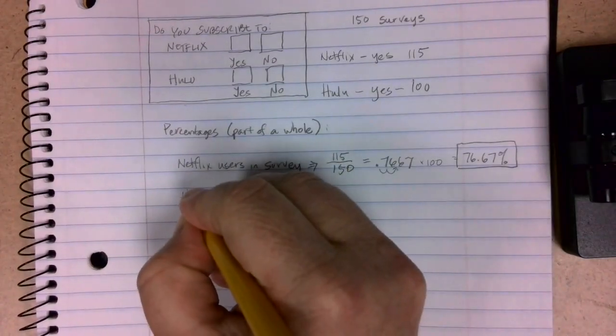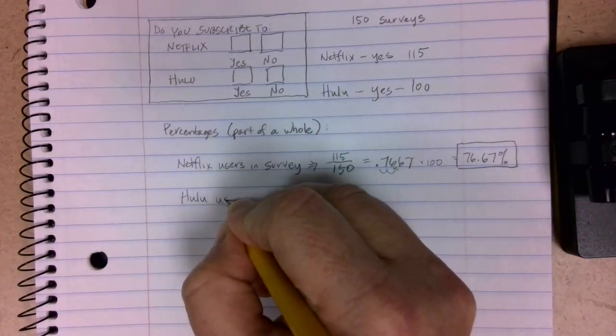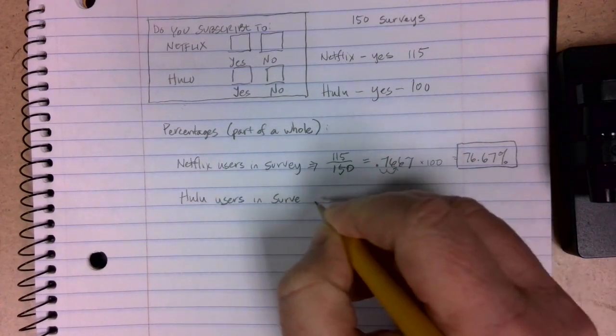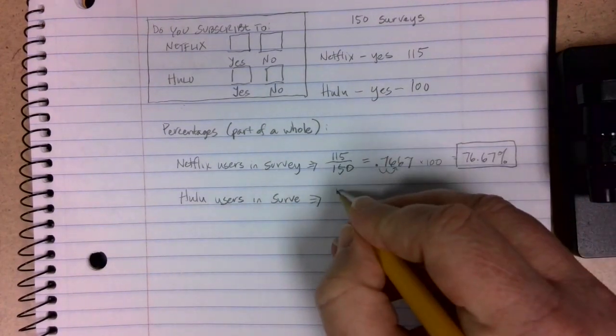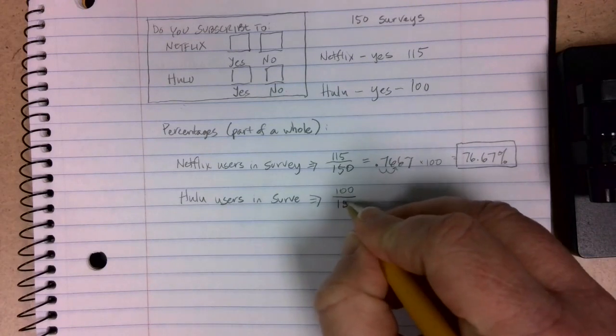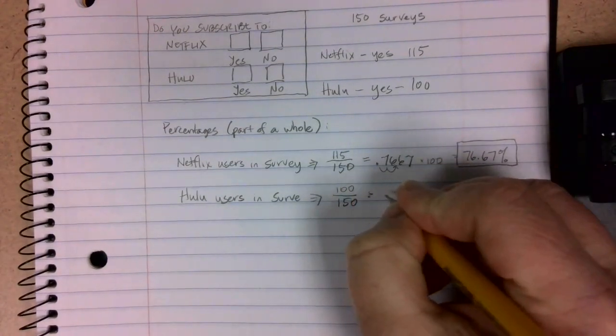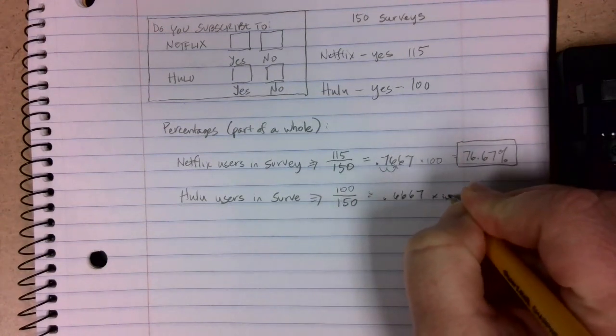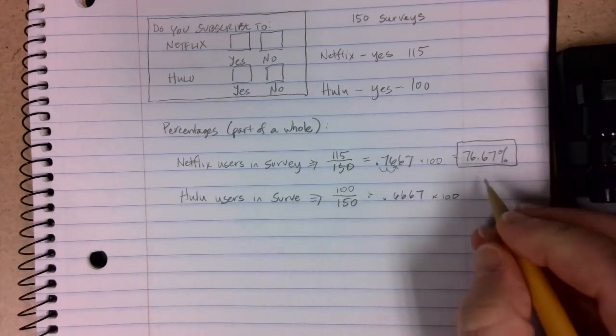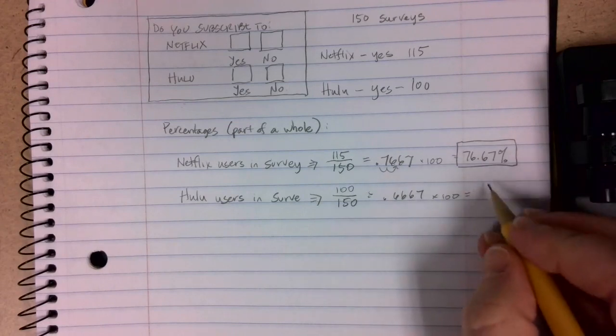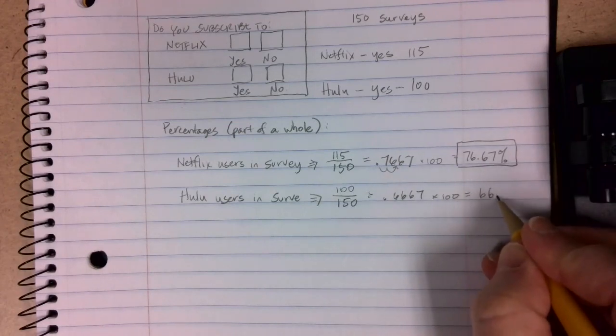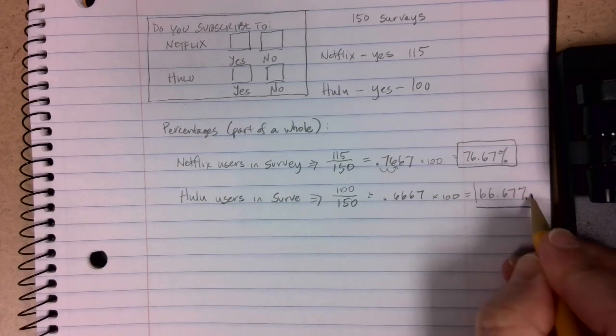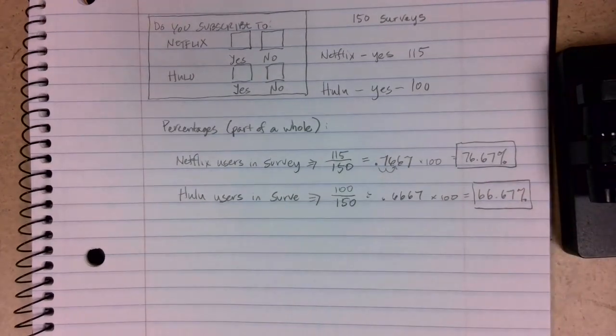Similarly, we can do the same type of thing for Hulu users in our survey. We had 100 people that answered yes out of 150 people that were surveyed. If we divide that, we get 0.6667, and we can convert that decimal into a percentage by multiplying by 100 and we get 66.67% of my survey people are Hulu users.